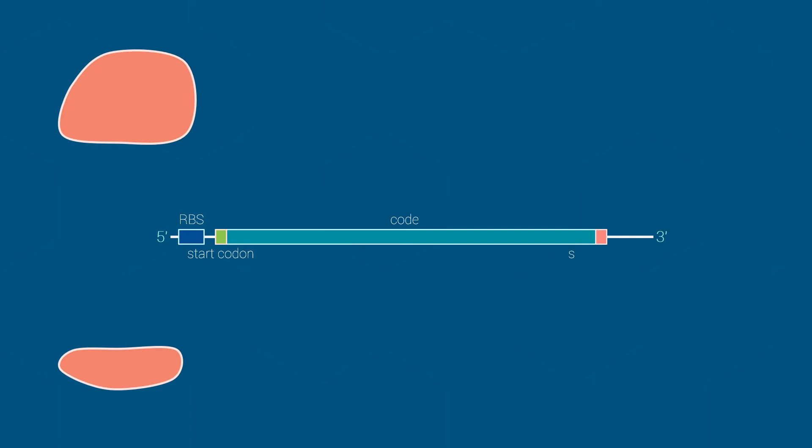Finally, the stop codon tells the ribosome when to stop making the polypeptide chain. Please note that the stop codon does not correspond to any amino acid in the final protein.